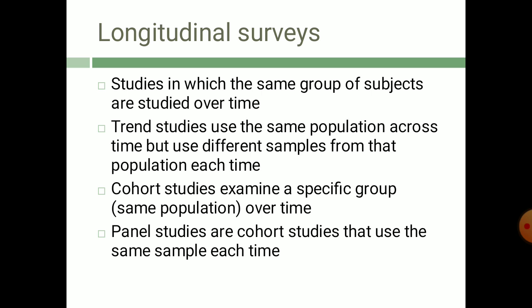Trend studies use the same population across time but use different samples from that population. Cohort studies examine a specific group. Panel studies are cohort studies that use the same sample.